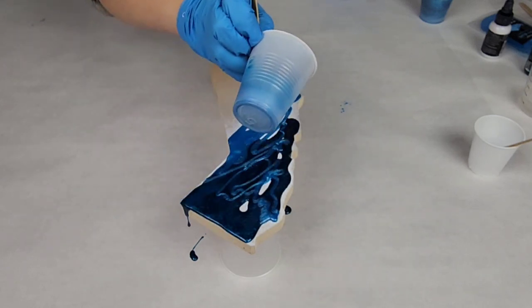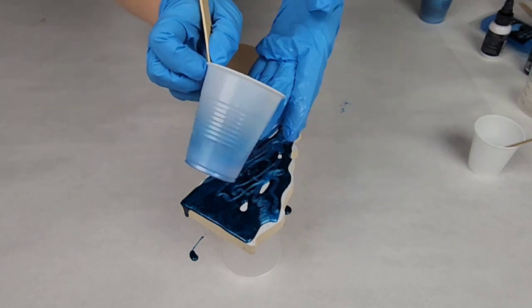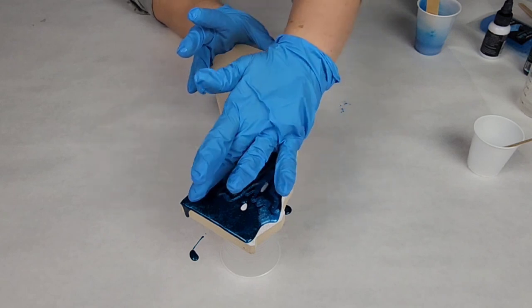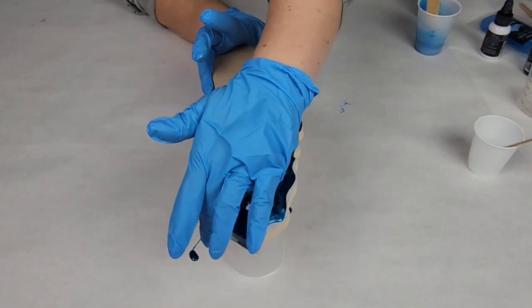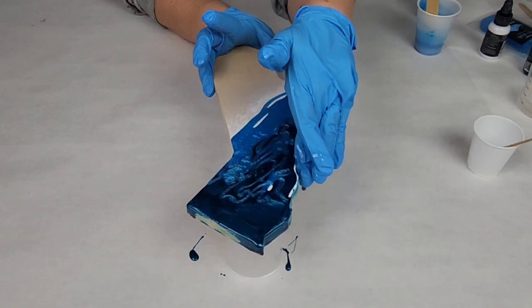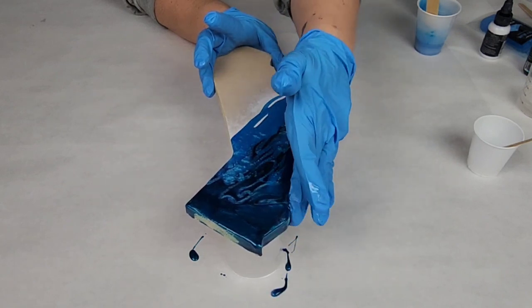Now to prime this board, I just spray painted it with some white spray paint. You could use gesso or whatever you'd like. I have it raised up on some cups here. And I'm starting off with my blues for the water.